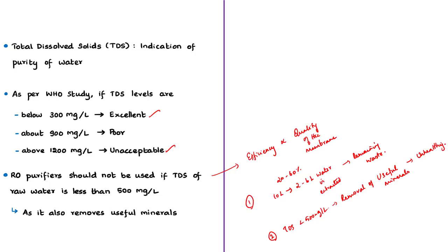Therefore, the National Green Tribunal directed the Ministry of Environment, Forest and Climate Change to issue a notification in May 2019. As per the ruling, the Ministry may issue an appropriate notification that prohibits the use of reverse osmosis systems where the TDS in water is less than 500 milligrams per liter. Wherever RO is permitted, the requirement for water recovery needs to be laid down — the recovery shall be more than 60 percent, meaning the efficiency of RO purifiers shall be more than 60 percent. Furthermore, from the reject water of the RO system, further water shall be recovered up to 75 percent.